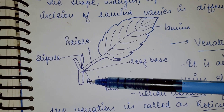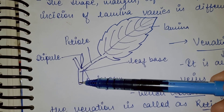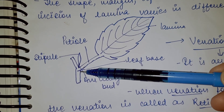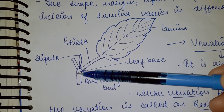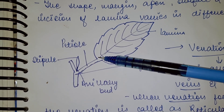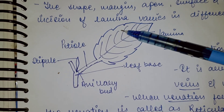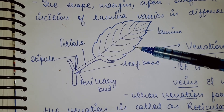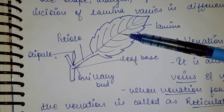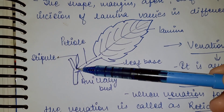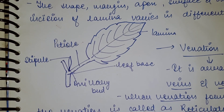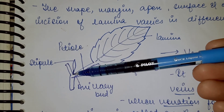In this diagram, we can see the leaf base which is attached to the stem, the stipules present at the leaf base, and the axillary bud present at the axil of the leaf.